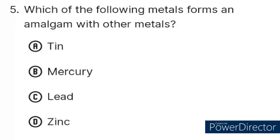Question number 5. Which of the following metal forms an amalgam with other metals? Option A: Tin, B: Mercury, C: Lead, D: Zinc. The correct answer is Option B: Mercury.